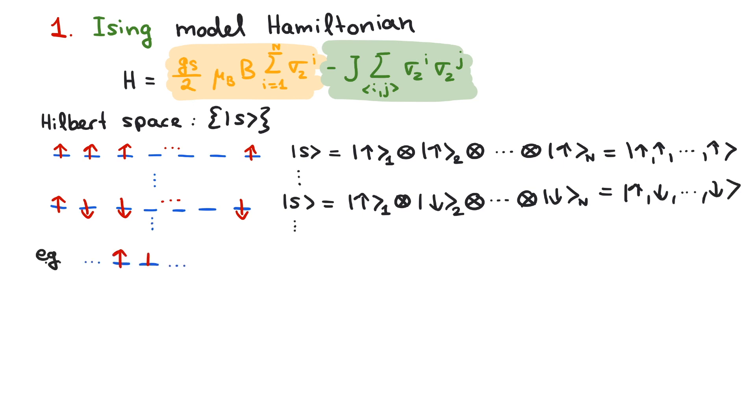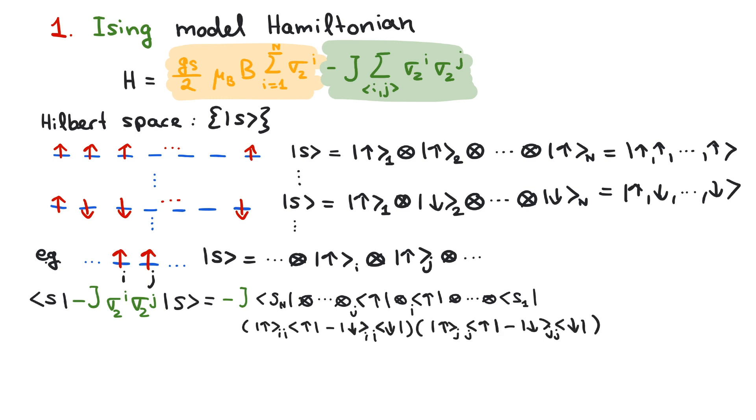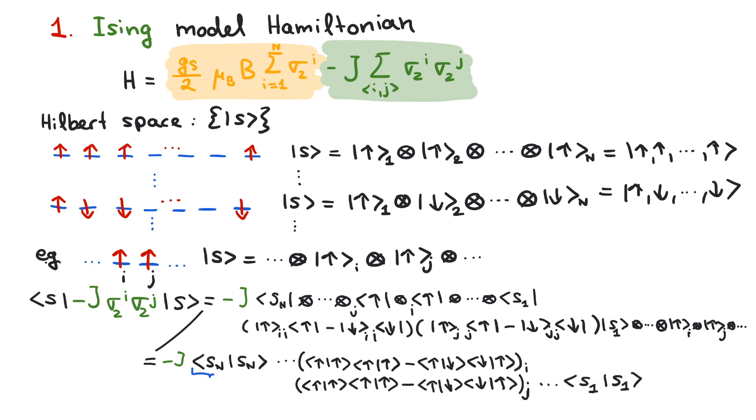Consider, for instance, the state for nearest neighbors I, J with spin up. When we evaluate the interaction between I and J of this state, we plug in the Pauli matrices written in bracket notation corresponding to our basis. Then we evaluate all the inner products to finally obtain simply minus J as a result. In case of I and J pointing in opposite directions, their interaction term yields J.